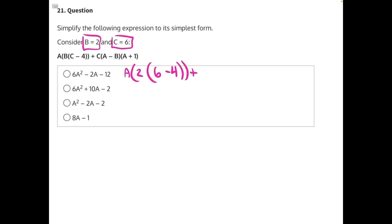Plus C, which is 6, times A, our unknown variable, minus B, which is 2, times A, our unknown variable, plus 1.